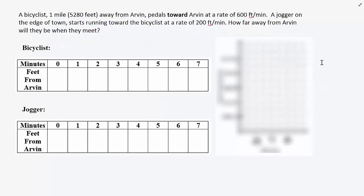Let's put this information in a table. The biker starts 5,280 feet from Arvin. Every hour, the biker gets 600 feet closer to Arvin.